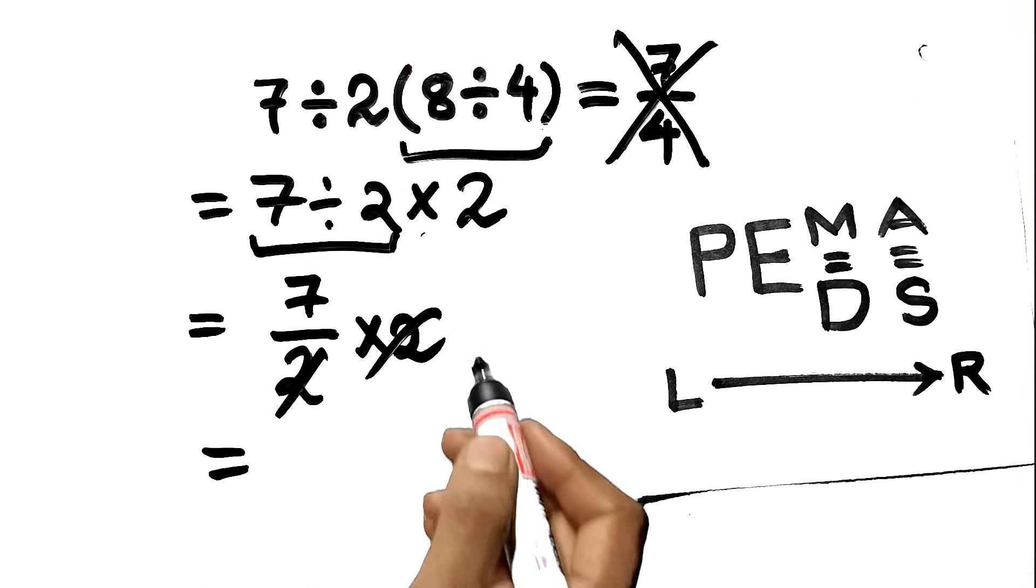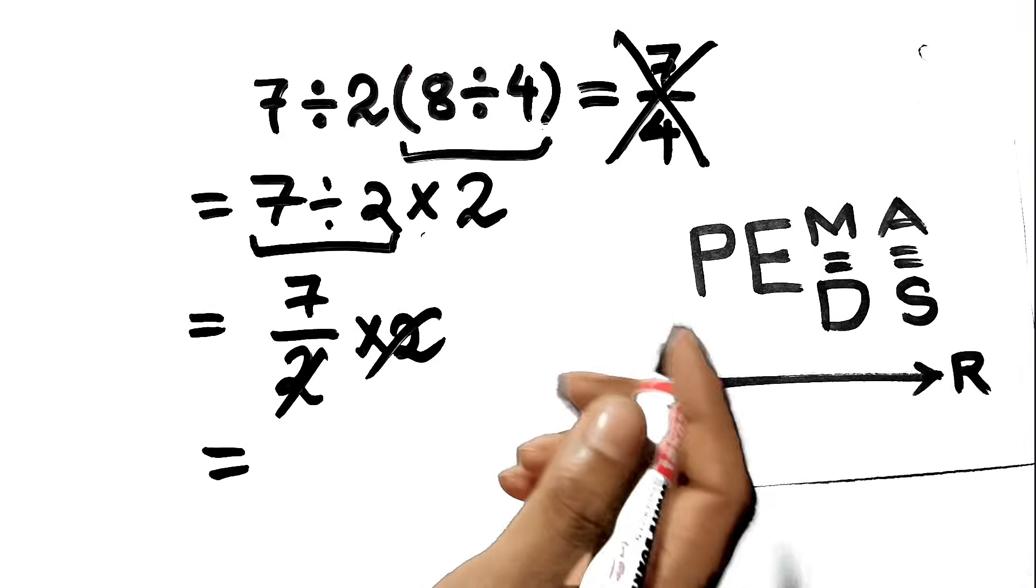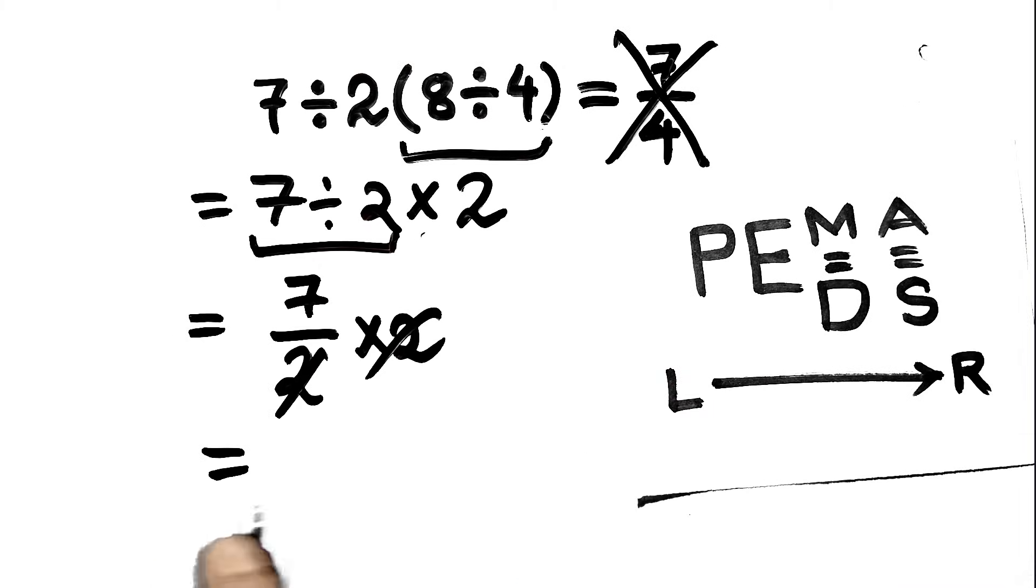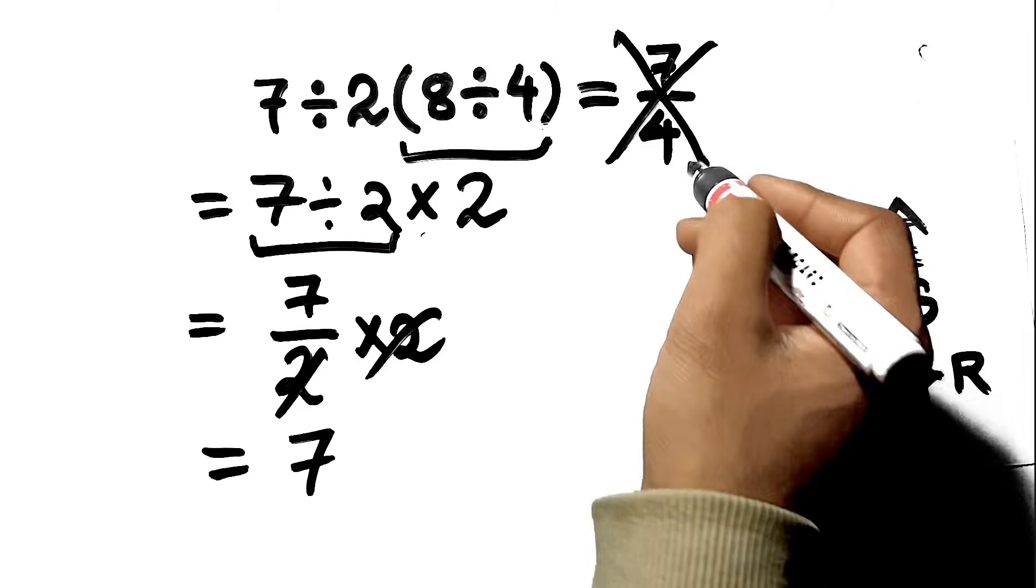Done. No shortcuts. No assumptions. Just proper left to right handling of division and multiplication. So the correct answer is 7, not 7 over 4.